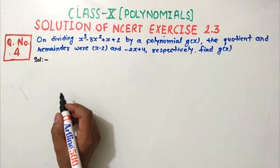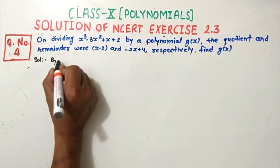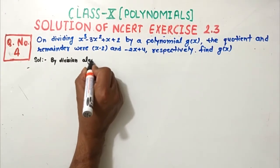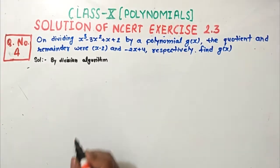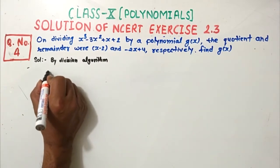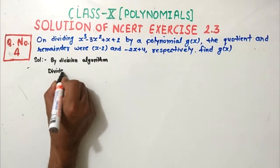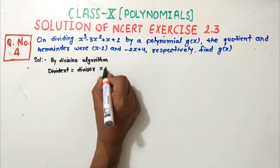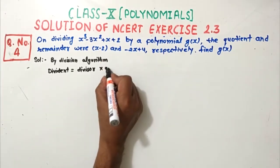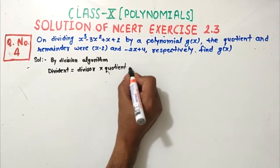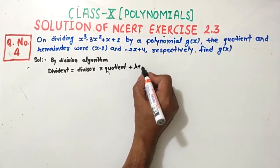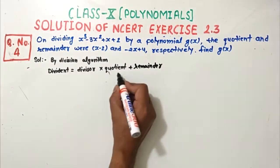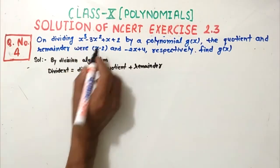We know that by the division algorithm: dividend = divisor × quotient + remainder. So dividend is equal to divisor into quotient plus remainder.